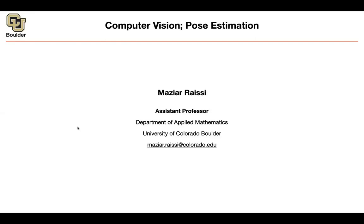Another category is pose estimation. I want you to keep in mind that a keyboard, a mouse, and a trackpad are not the only ways of interacting with a computer. There are other ways — this is human-computer interaction. For instance, you can stand in front of your camera, do some gestures, and an animated character in a movie